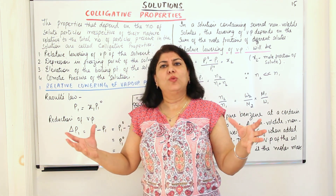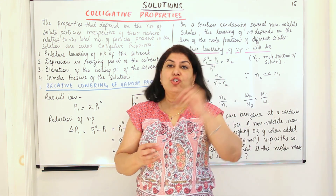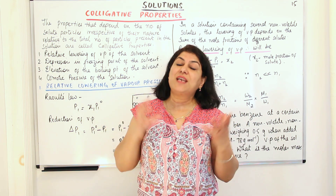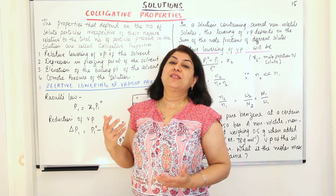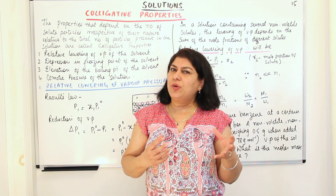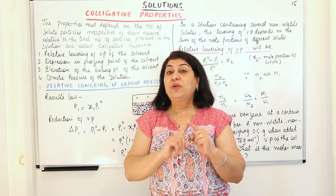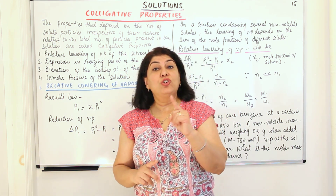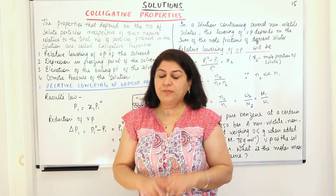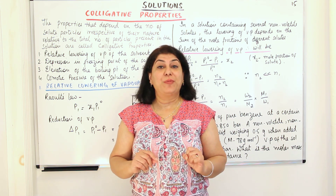It did not matter what the solute was. You can take any solute and whatever solute you put in, that solute is going to occupy some of the surface area and is going to have the same effect. So this decrease in vapor pressure is a property that depended only on the number of molecules of the solute and not on the properties or the nature of the solute. Such properties are called colligative properties.